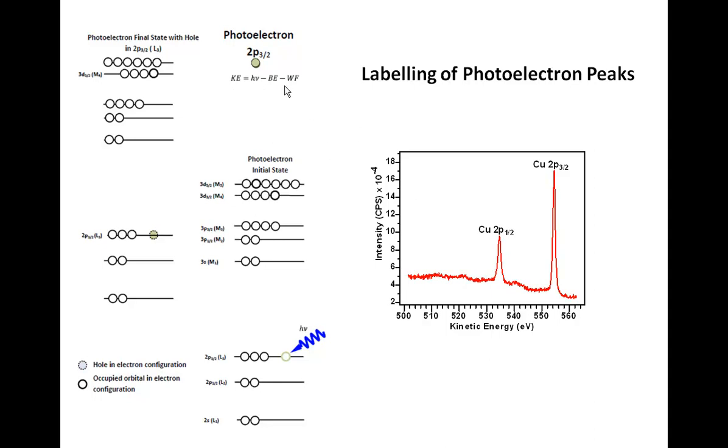This is essentially the relationship that converts the photon energy and the binding energy of an atom to the kinetic energy that we observe in the data. The reason we use the label copper 2p3/2 for a specific photoelectron peak is related to the fact that we have created a hole in this shell of electrons.